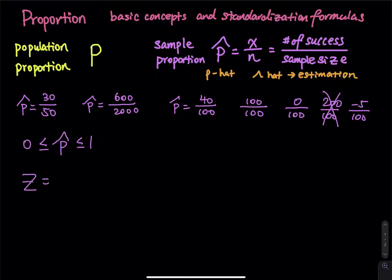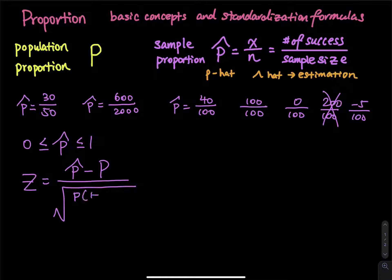To standardize, the formula is z equals p-hat minus p, divided by the square root of p times (1 minus p) divided by n. The denominator is called the standard error, abbreviated SE.